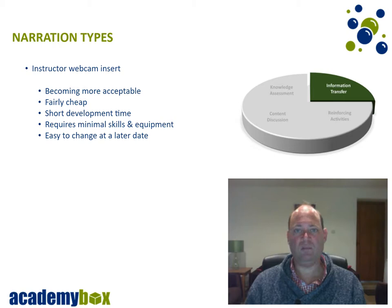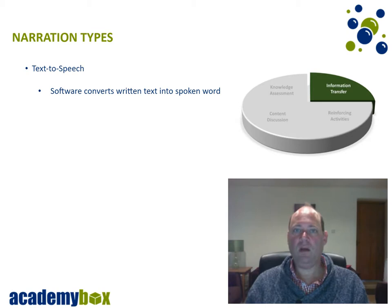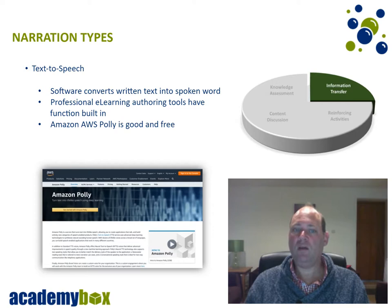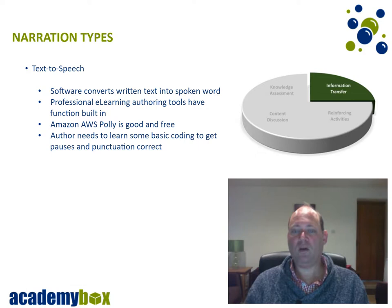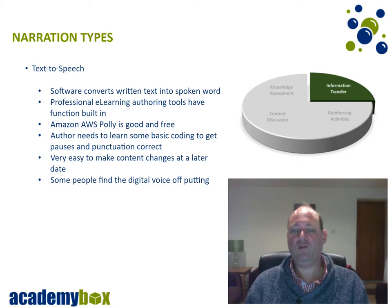Another option to consider is text-to-speech. This uses special software that converts written text into spoken word and can be done in a number of different accents. Most professional e-learning authoring tools have this functionality built in, but personally I like to use Amazon Polly as it's very good and free for most applications. It does require the author to learn a few basic coding techniques to control pauses and punctuation. One of the advantages is that it's extremely easy to make content changes at a later date since the words come out exactly the same every time. One downside is that some people find the digital voice quite off-putting.